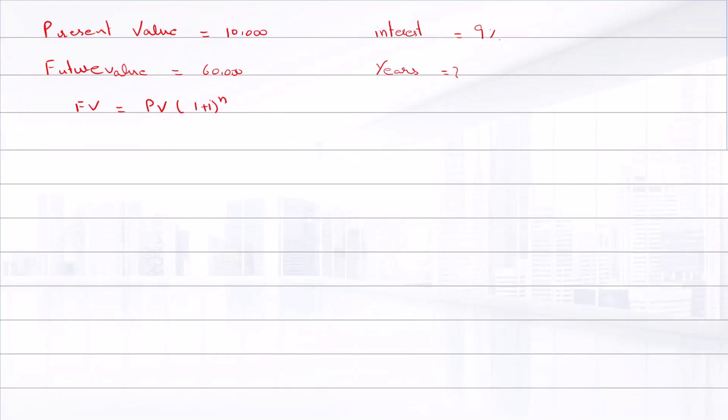And solving it for n, we will get n equals log of FV divided by PV, and whole divided by log of one plus i.